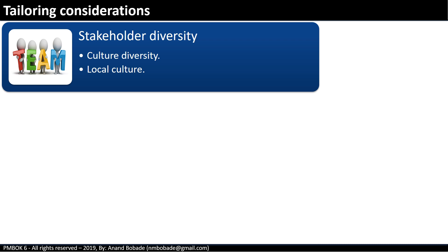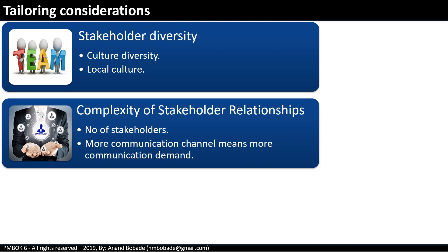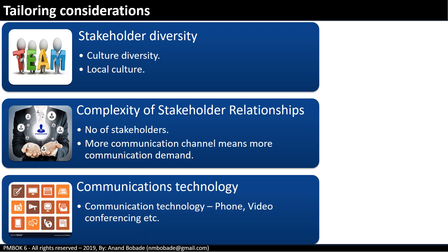Tailoring considerations: project conditions or the organization in which the project is executing may drive process tailoring. For example, a software project to change a small company's website may not need a lot of stakeholder engagement or management. Stakeholder diversity in the project team or local culture may demand special activities or means to engage stakeholders. A large number of stakeholders may increase the complexity of stakeholder relationships, demanding more communication channels. Use communication technology to eliminate miscommunication — for example, a phone, video conferencing, or a Kanban board for project status tracking can be very effective tools.